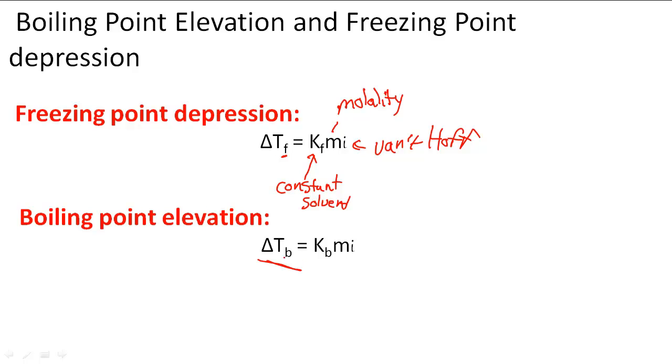So B stands for boiling point. Kb also stands for the constant of the solvent, except we are talking about how it affects the boiling point. M stands for molality and I stands for the Van't Hoff factor.